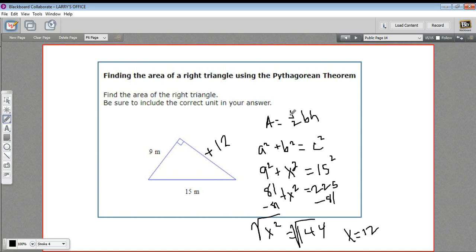Now we can go ahead and use our area formula. We're going to call the base 12 and the height 9. So we're going to get area equals one-half times 12 times 9. One-half of 12 is 6, and 6 times 9 is 54.